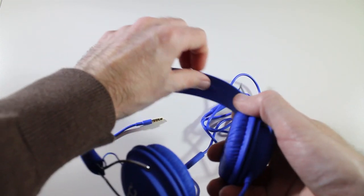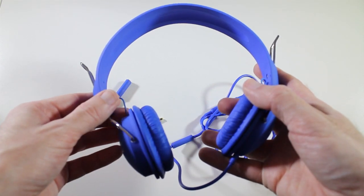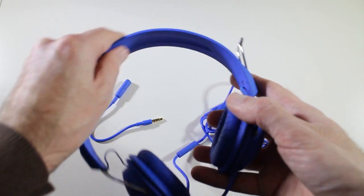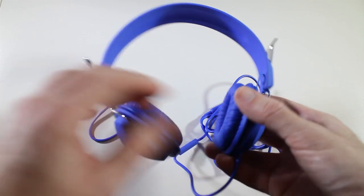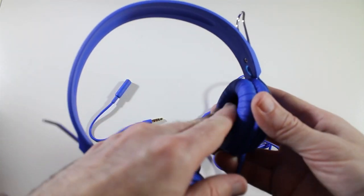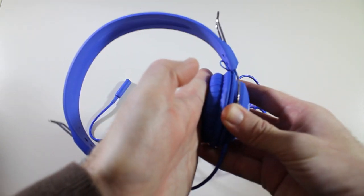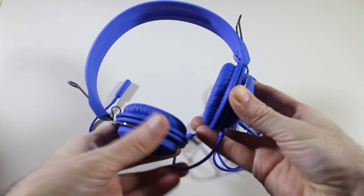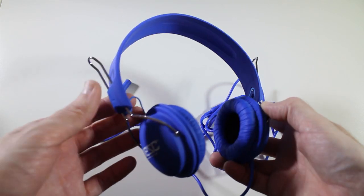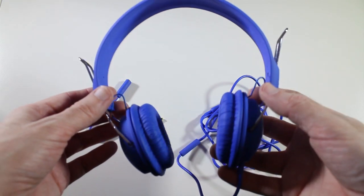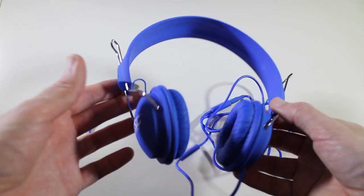With regards to padding, the actual headband itself hasn't got any padding at all but it is quite soft. It's got a soft, smooth feel to it. With regards to the ear cup padding, this is pretty good. A good amount of padding on the ear cups and a good amount of comfort. They are very lightweight. They weigh just over 100 grams so they're not going to feel heavy on your head for a long time.